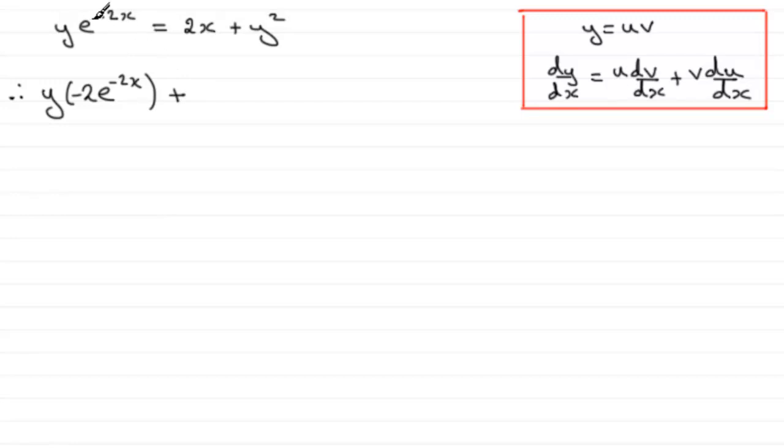And then we'd have to plus, let me do it the other way around. We take this part, e to the minus 2x, and we multiply it by the differential of this part with respect to x. The differential of y with respect to x, though, remember we've got to do implicit differentiation. Differentiate y first of all with respect to y, which is one, and then we multiply it by dy/dx. So that's the implicit differentiation bit.